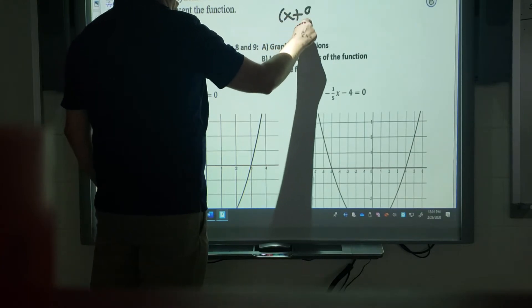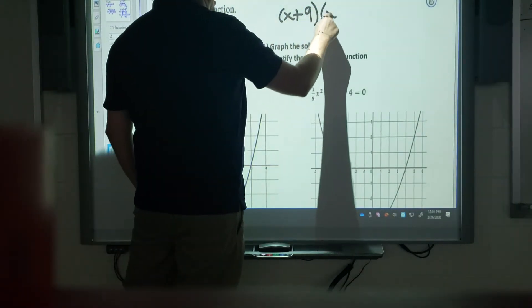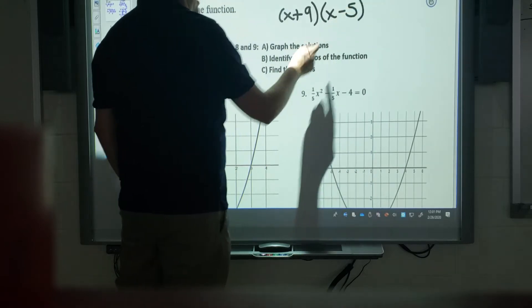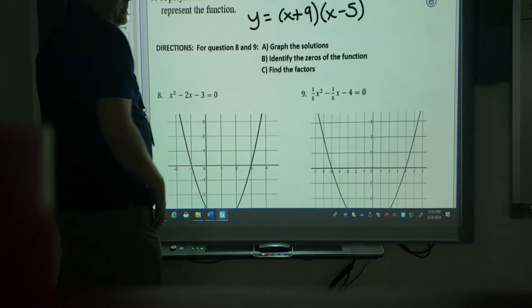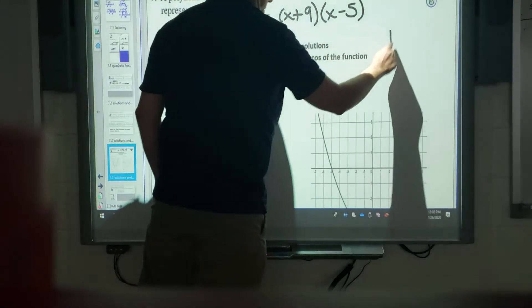So instead of negative 9, I can do positive 9. Instead of positive 5, I know I can do negative 5. And hey, that's your answer. You could go ahead and multiply this out by drawing one of those little roots.